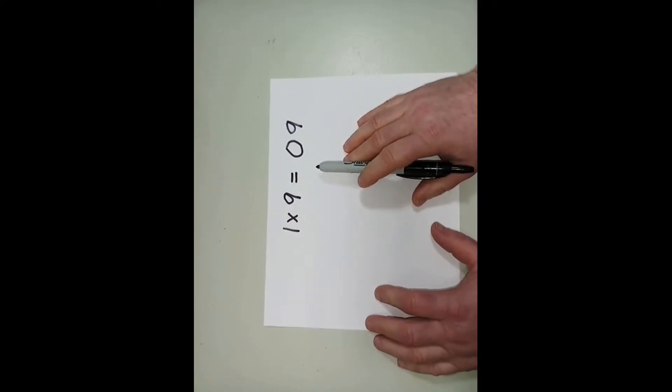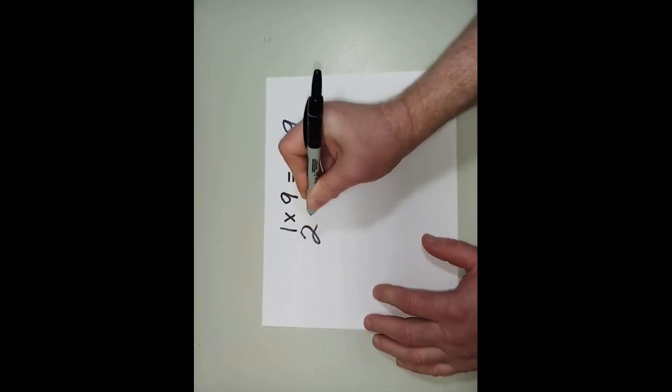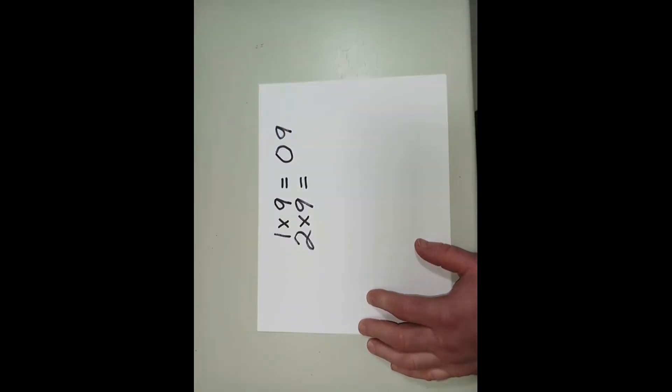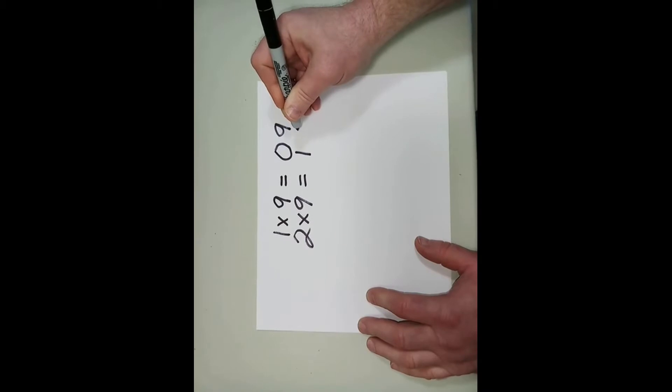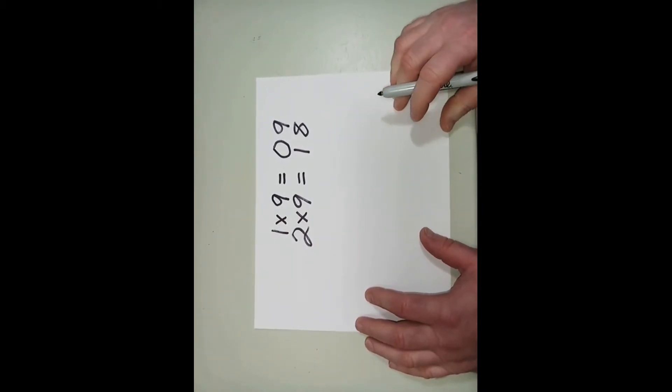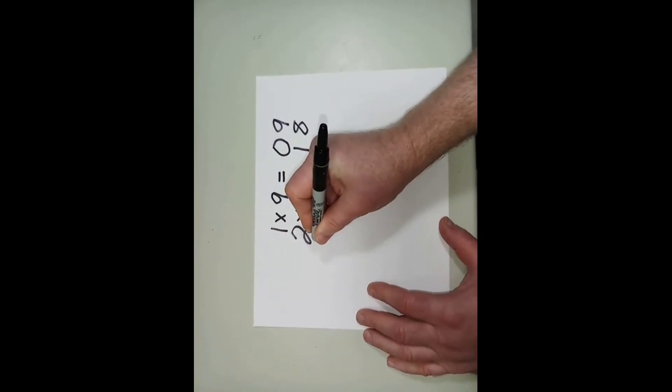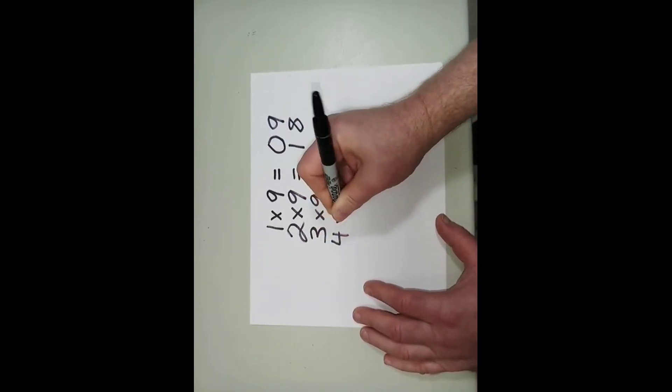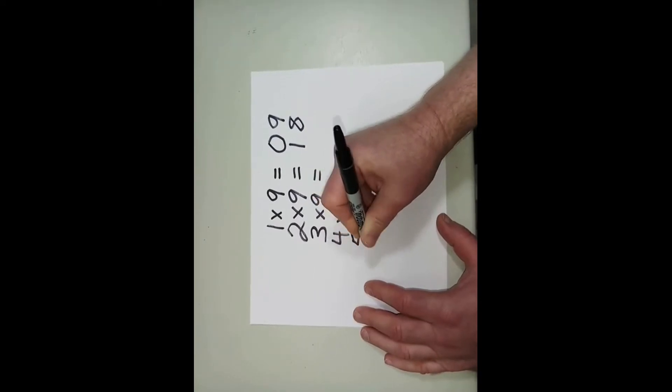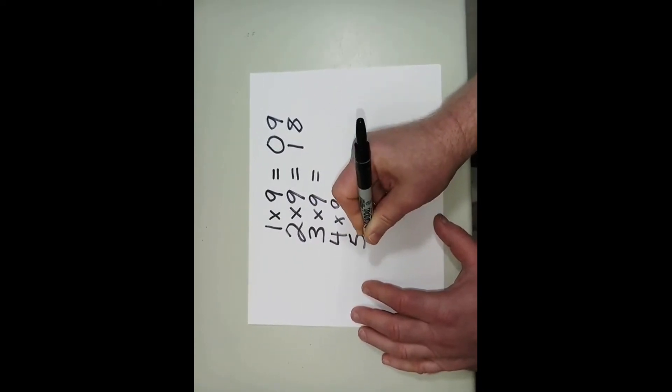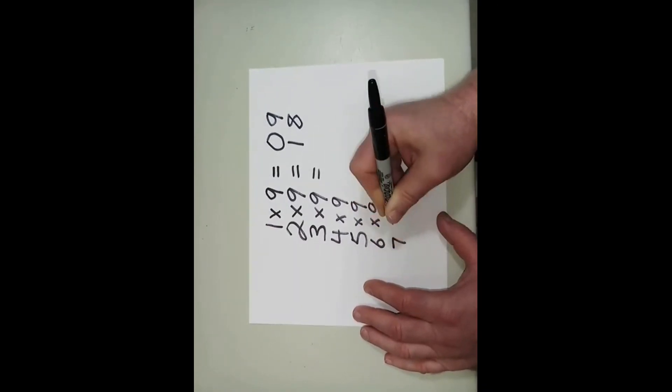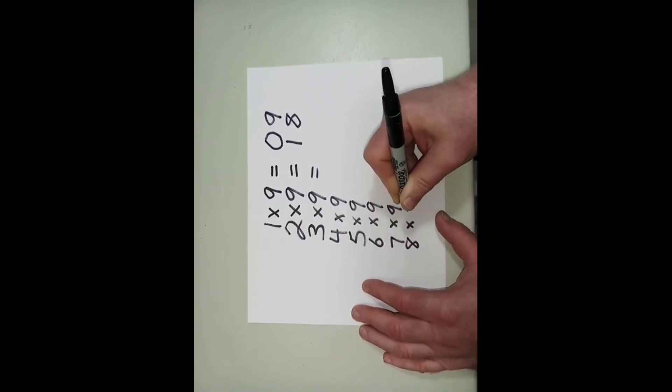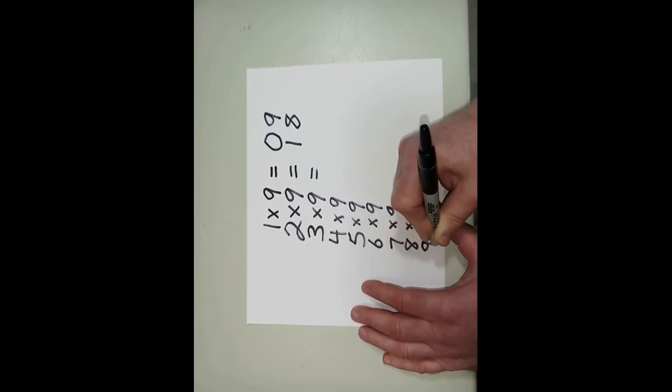For the rest of the activity we just need to keep everything lined up. Next problem, 2 times 9 and our answer is 18. And then we're going to continue this way all the way to 9 times 9. And we're just going to keep everything lined up. And try to make sure that you leave yourself enough room to get everything on your piece of paper.